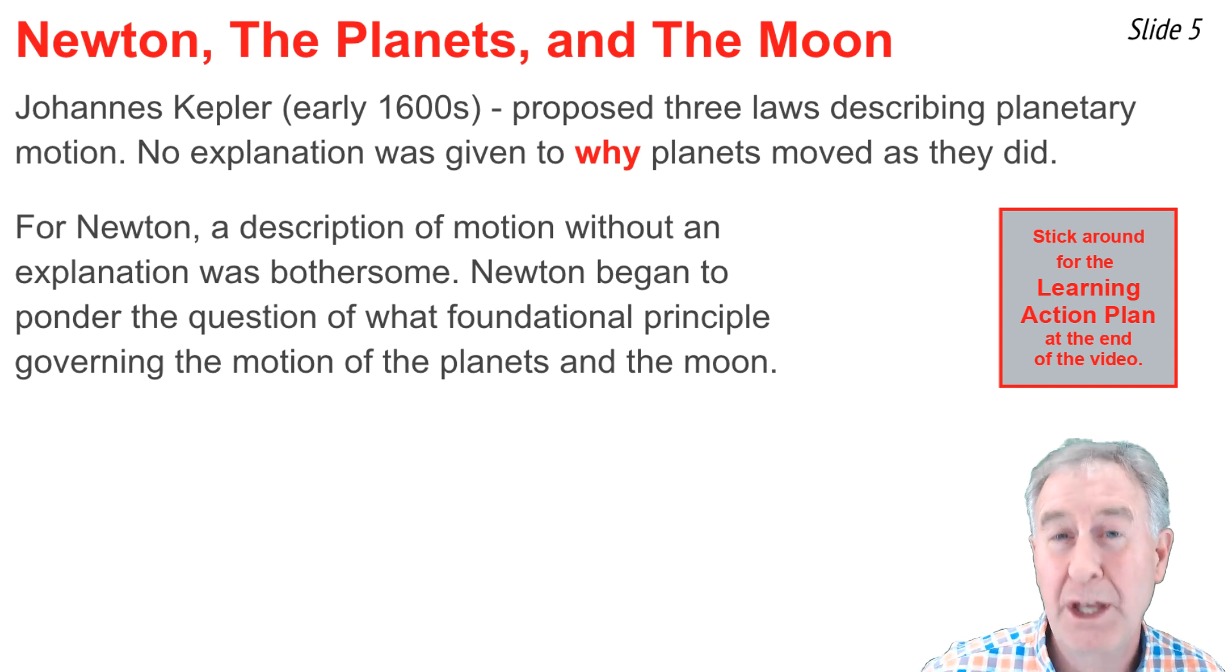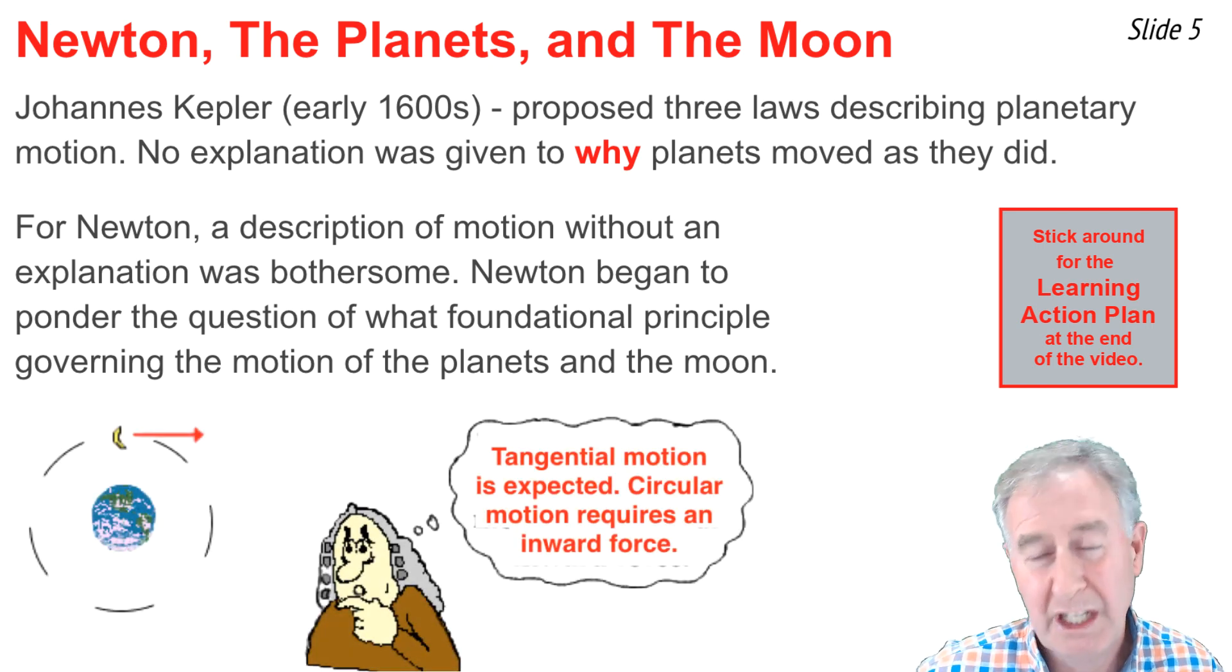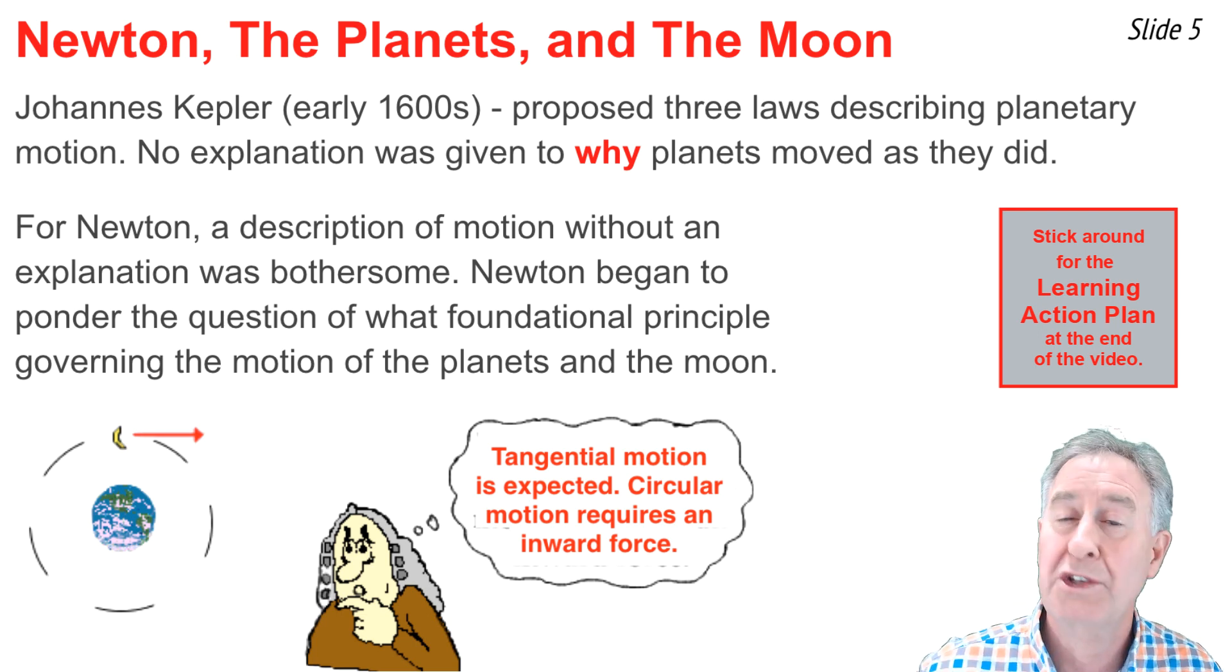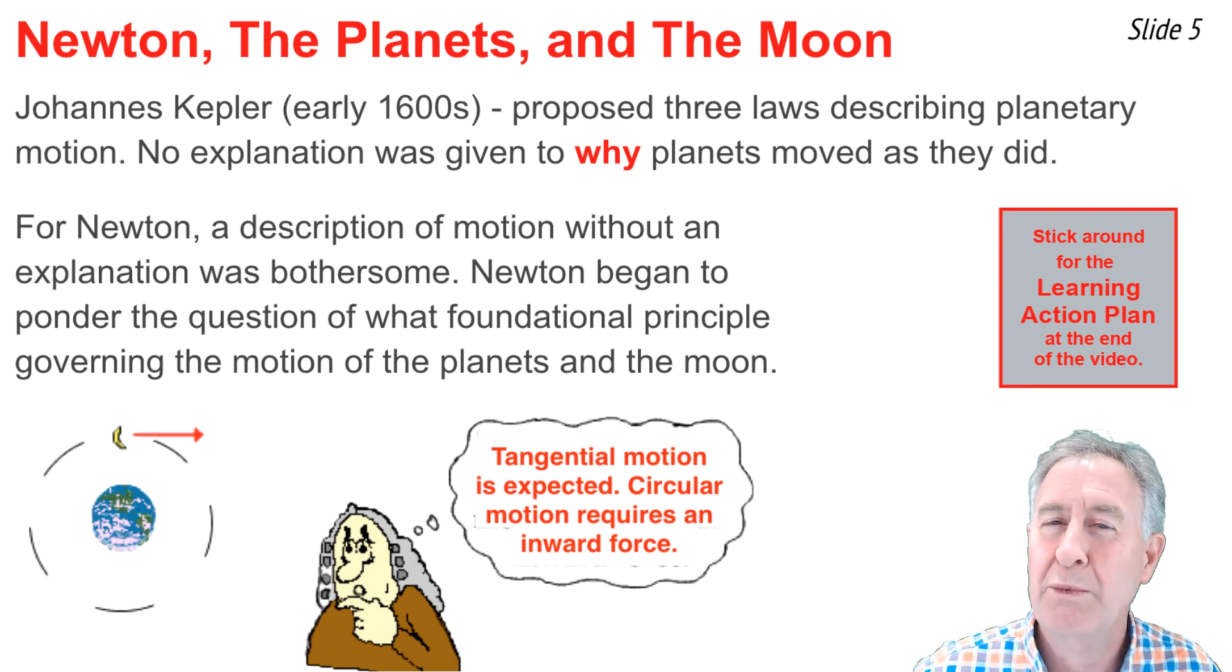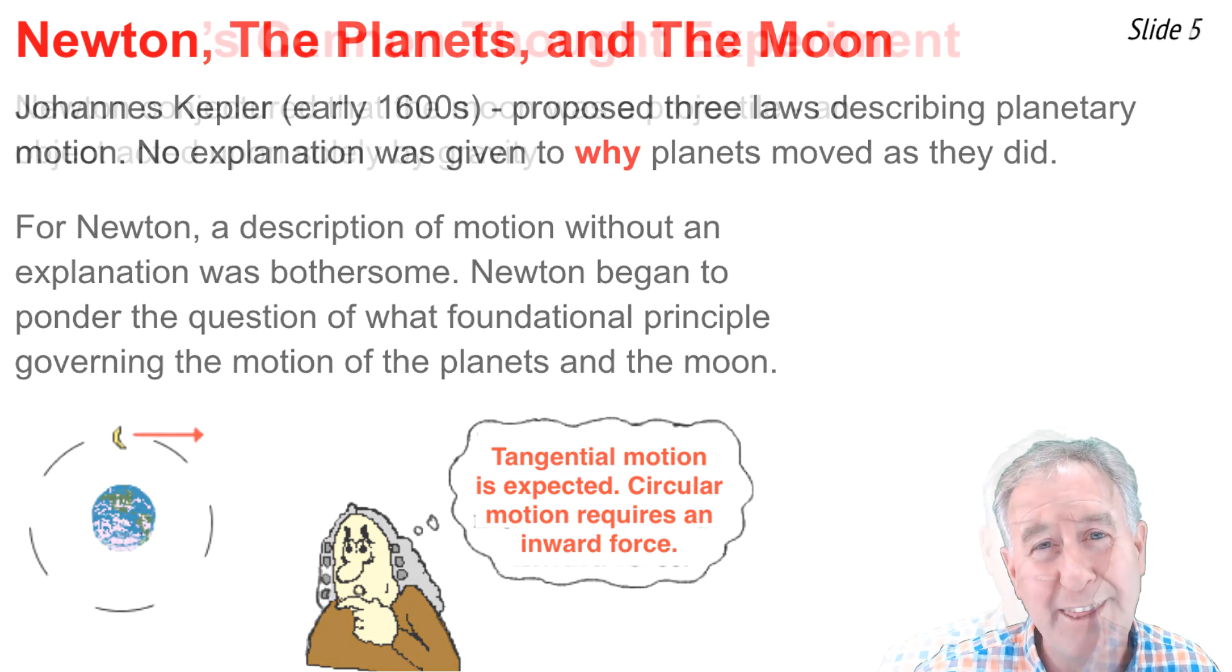And, even more bothersome, the motion of the moon orbiting the earth. For Newton, he knew that the moon was moving in circular motion, and because it was, it had an acceleration. And for him, accelerations required some form of unbalanced force. What was the force that would cause the moon to deviate from its otherwise straight-line inertial path?